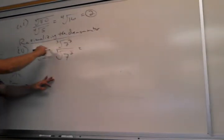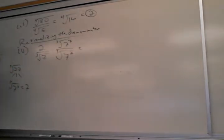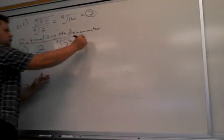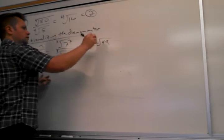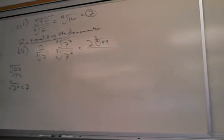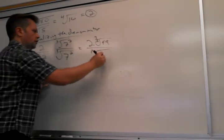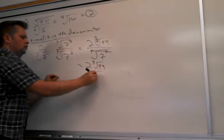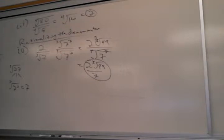I multiply top and bottom by the cube root of 49 — that's 7 squared — which is what the denominator is missing. On the top I get 2 times the cube root of 49. I can't combine the 2 and the 49 because the 2 doesn't have a cube root. On the bottom I get the cube root of 7 cubed, which equals 7. So the bottom is now rational — that's the final answer: 2 times the cube root of 49, all over 7.